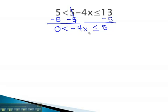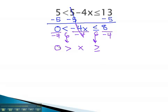To isolate x, we divide all three parts by negative 4. Notice on this step, we're dividing by a negative, so the inequality symbols will flip and change direction. We get 0 is greater than x, which is greater than or equal to negative 2.